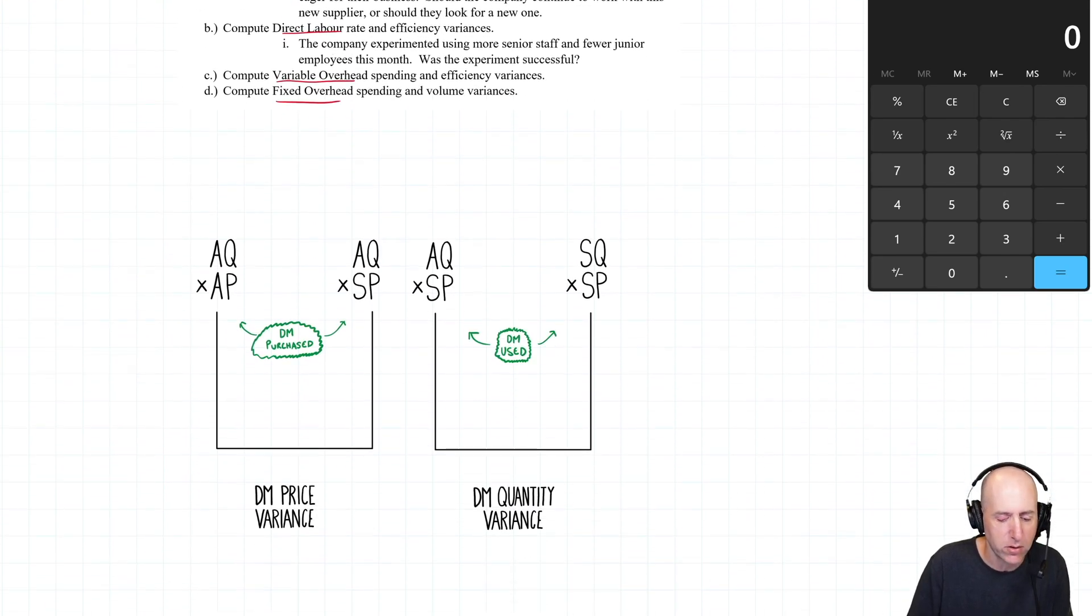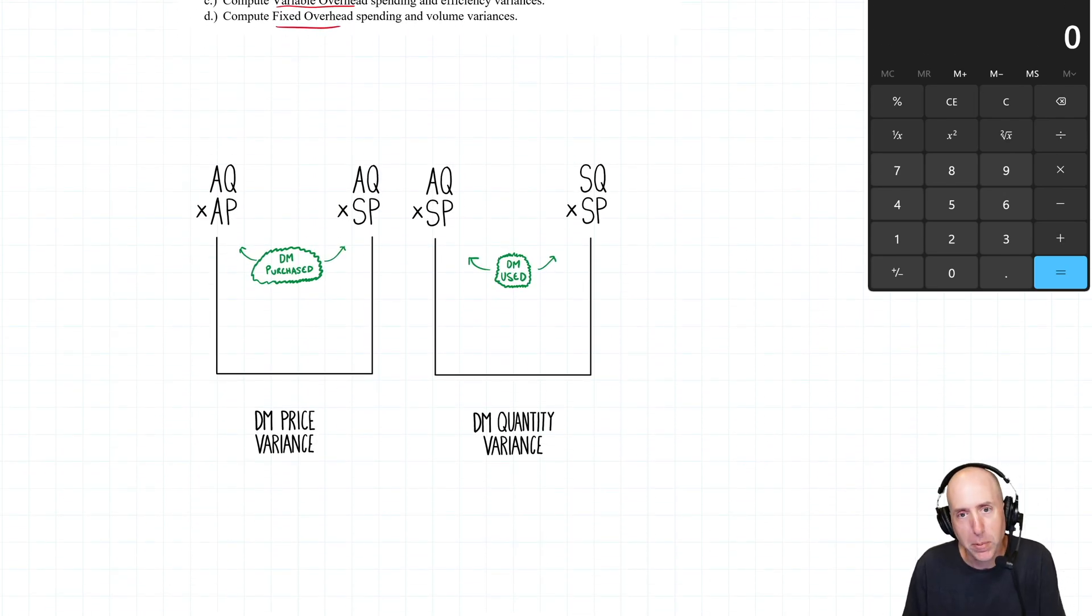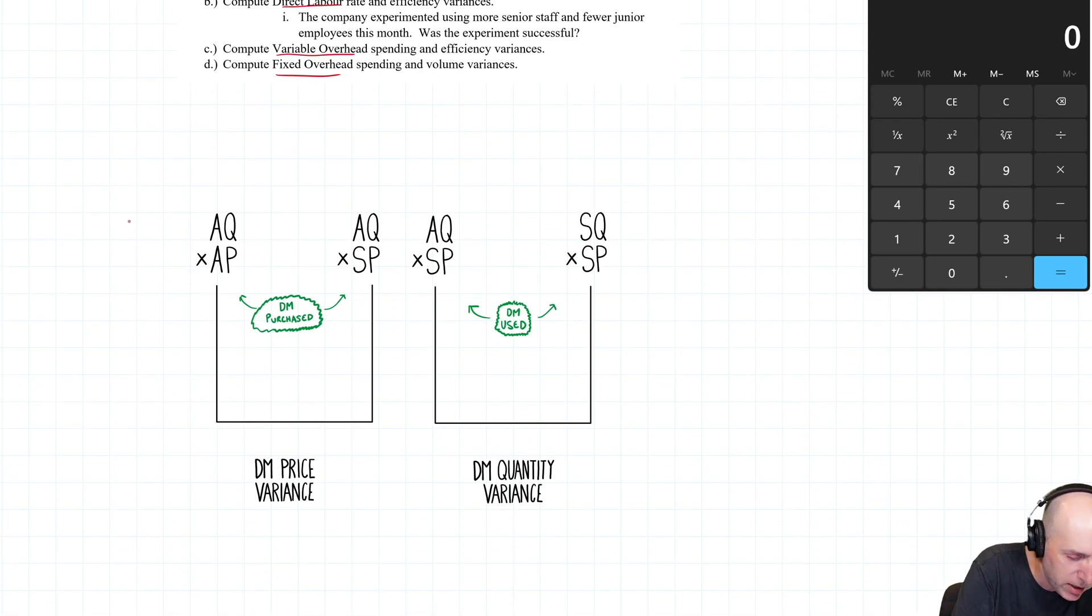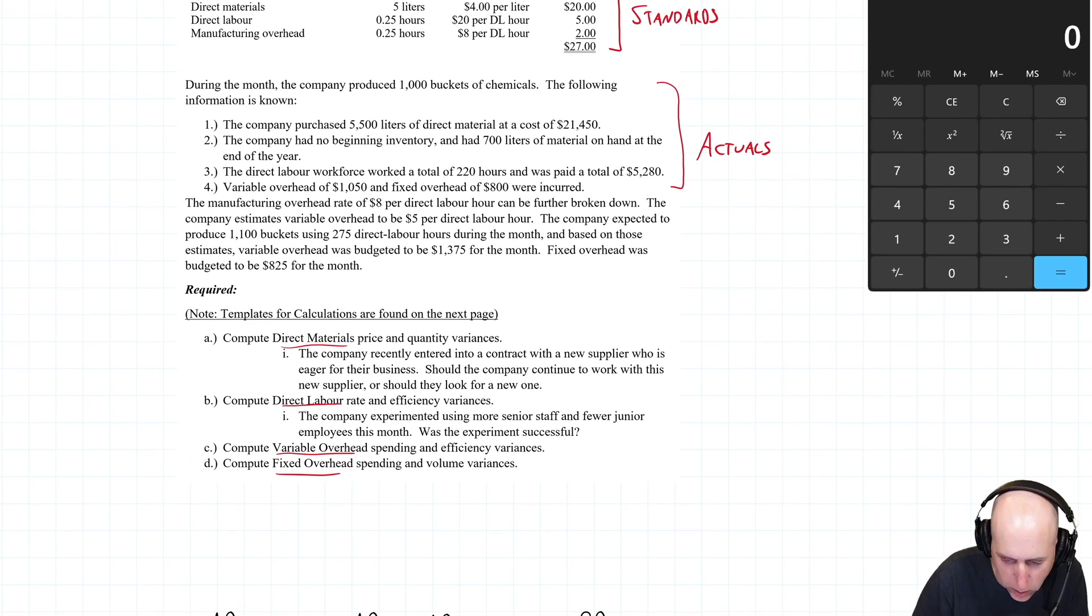So let's think of our materials variances, and this is the table I've provided. When I test my students, I don't give them this table. They'll have to remember it and produce it on the test, but here it is for us to fill out. We're looking for the actual quantity of material used in liters times the actual price per liter, actual quantity times standard price, and so on. So let's see if we can find that information. The company purchased 5,500 liters of direct material at a cost of $21,450.